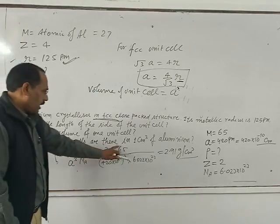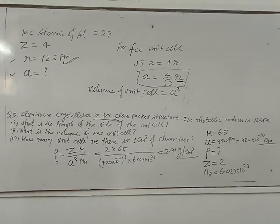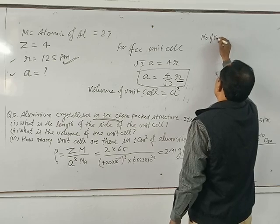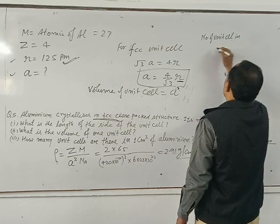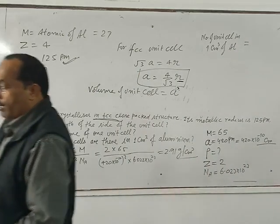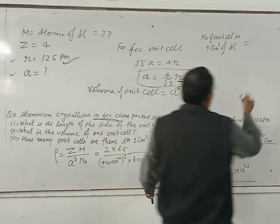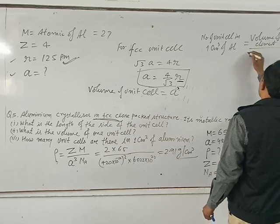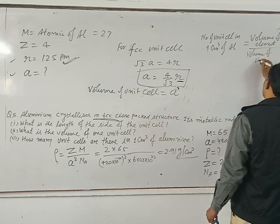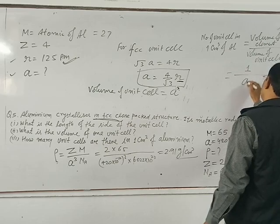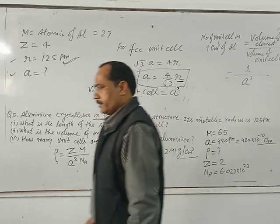Next: how many unit cells are there in one centimeter cubed of aluminum? The number of unit cells in one centimeter cubed of aluminum equals the volume of the element divided by the volume of one unit cell. Volume of element is 1 cm³, and volume of one unit cell is A cubed.